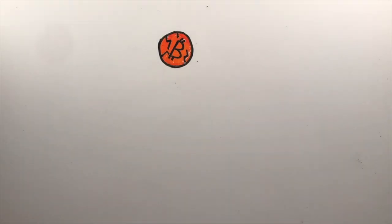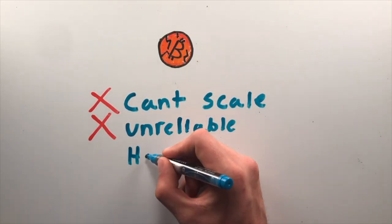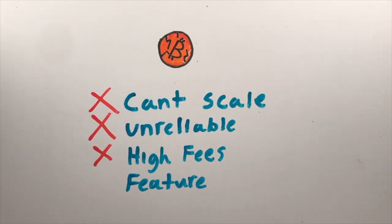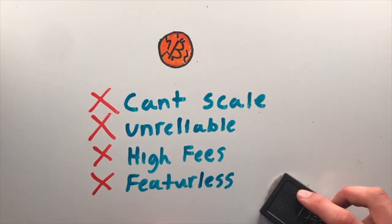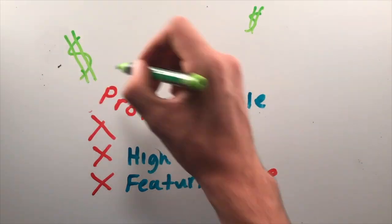Or the other extreme. If Bitcoin can't scale on-chain, has unreliable transaction times, high fees, no smart contract capabilities, there will be endless ways to profit from Bitcoin's shortcomings.